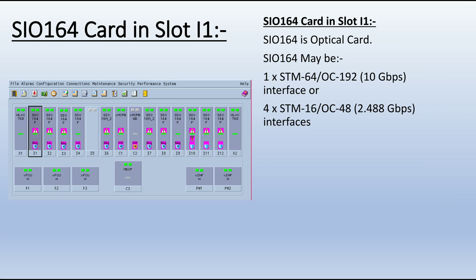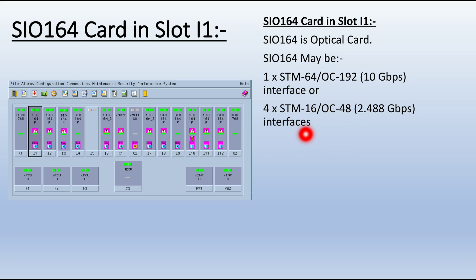SIO 164 card in slot I1. The SIO 164 is an optical card. It may be a 1x STM-64 or OC-192 interface, or a 4x STM-16 or OC-48 interface. So this card can provide one port of 10 Gbps or four ports of STM-16.